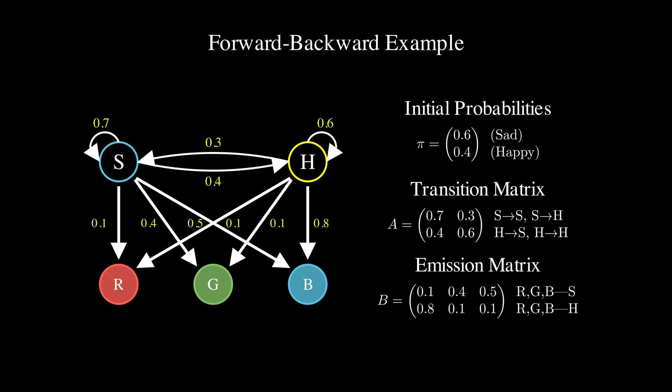Now, let's see how the forward backward algorithm works with a 3-day observation sequence of red, green, and blue hats.